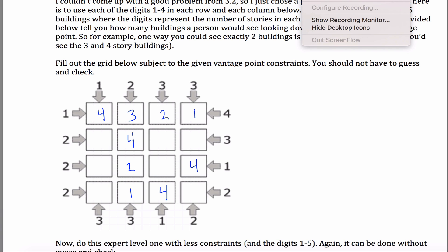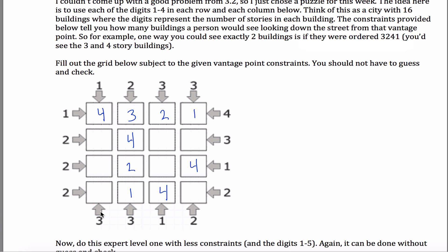So that gets me this layout. Looking at this three clue here, what I have left in this row is a two and a three — I've used up the one and the four. If there's a three right here, I won't see the one and two buildings behind it and there's no way I can get three visible buildings. So this cannot be a three, it has to be a two, and therefore this must be my three here.